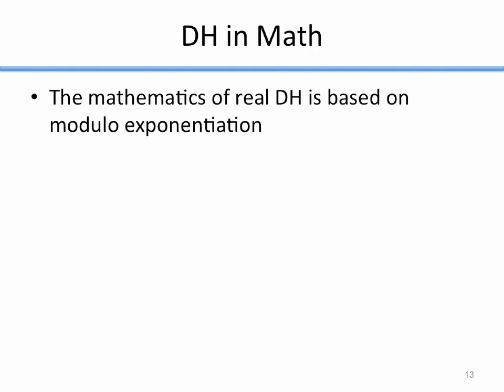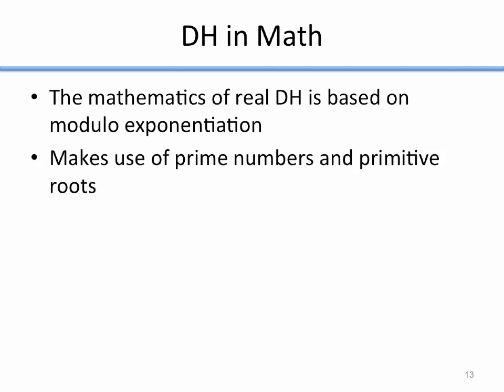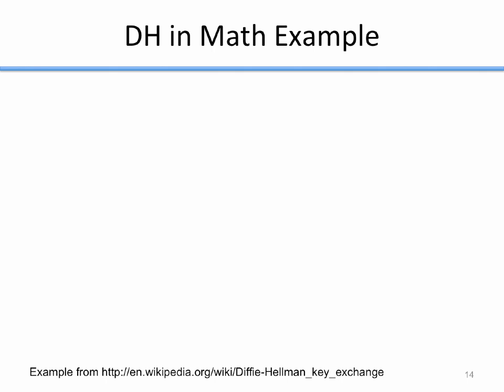In math, Diffie-Hellman is based on modulo exponentiation, which is really not that hard of a concept, and it makes use of prime numbers and primitive roots. The basic math is not hard. Let's walk through an example with smaller numbers so you can see what kind of math we're doing. This example is taken from Wikipedia, which has a lot of excellent cryptographic explanations.